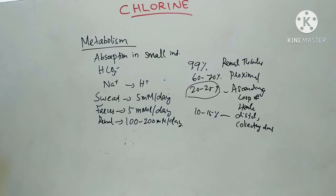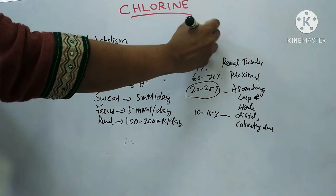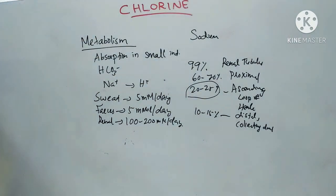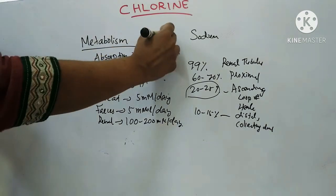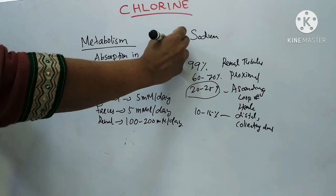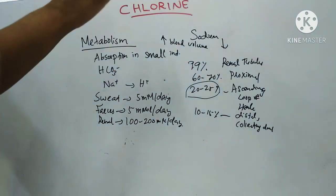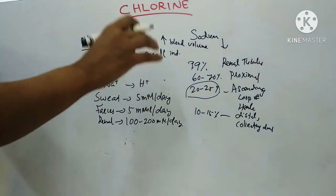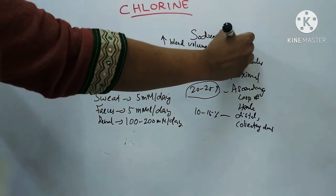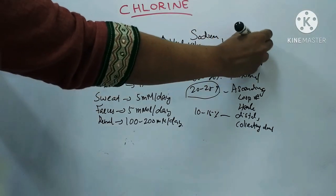The control of absorption and excretion of chloride is similar to that of sodium. Increase in blood volume decreases reabsorption of chloride, and vice versa.